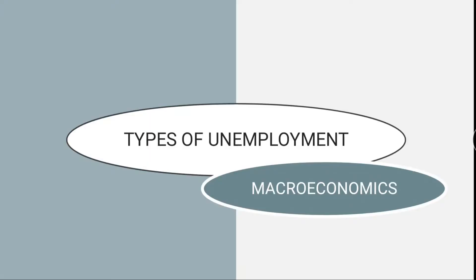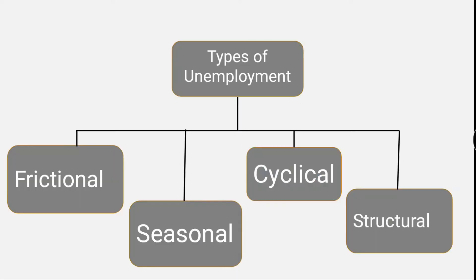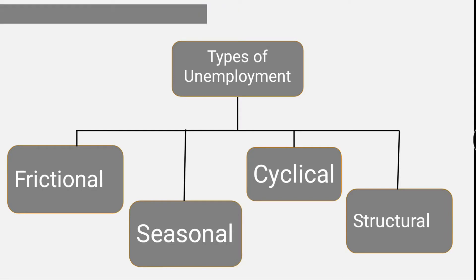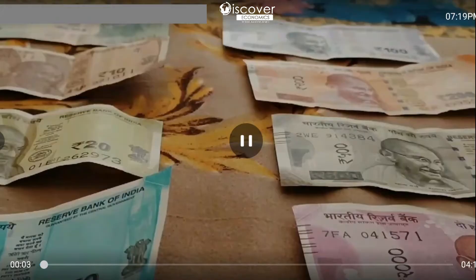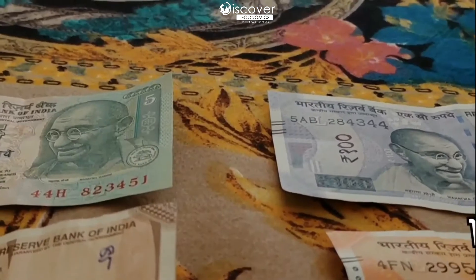Hello viewers, this is Kulsum Ahmed. Today I'm here with the topic 'Types of Unemployment.' This topic is of microeconomics. The types of unemployment we have are: frictional unemployment, seasonal unemployment, cyclical unemployment, and structural unemployment.